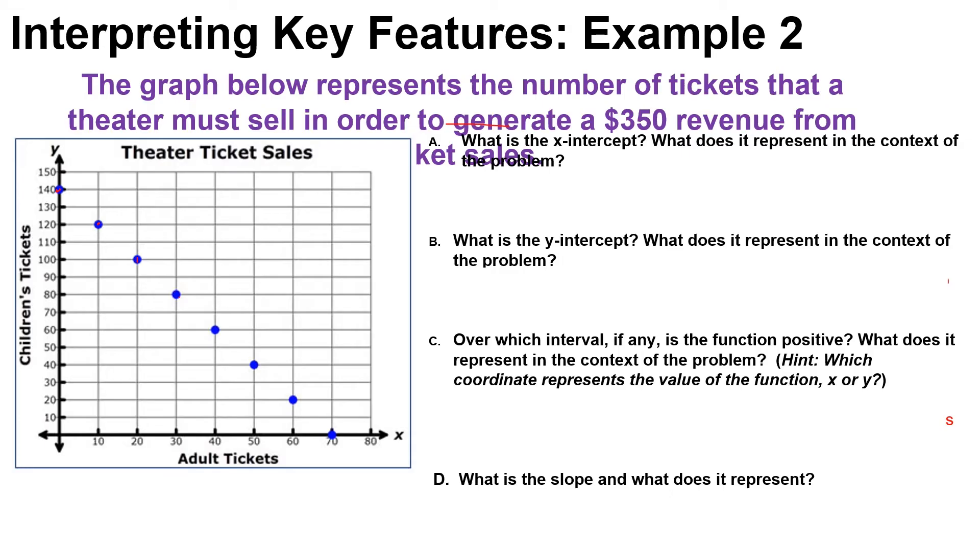Let's look at a. It says what is the x-intercept and what does it represent in the context of the problem? So remember the x-intercept is where that graph crosses the x-axis and the x-intercept is right here. That is the ordered pair (70, 0). So what it represents is when 70 adult tickets are sold and zero child tickets, zero child tickets must be sold to get a revenue of $350.